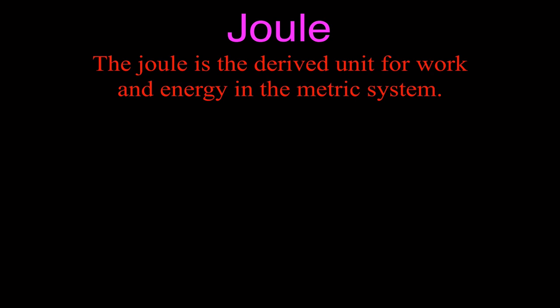The joule is the derived unit for work or energy in the metric system. It says 'derived' because it's not the base unit — the joule is a Newton-meter, meaning there are other units inside the joule. The joule is the metric unit for work and also for energy.